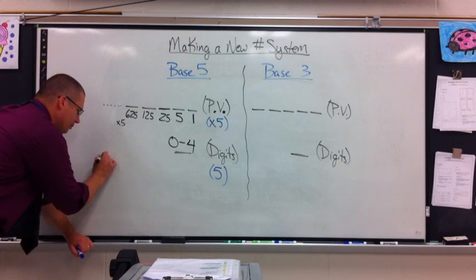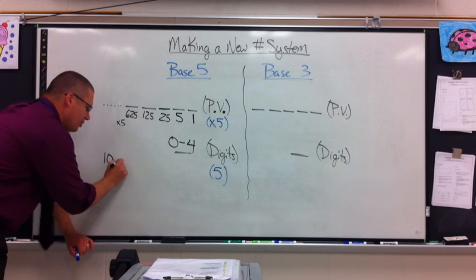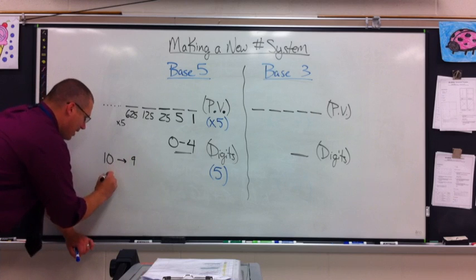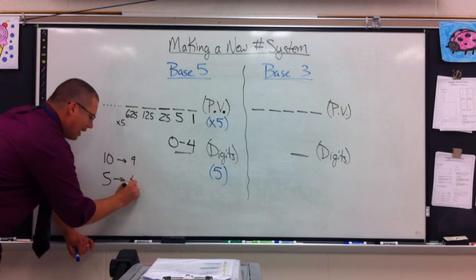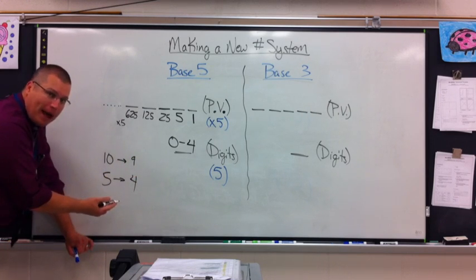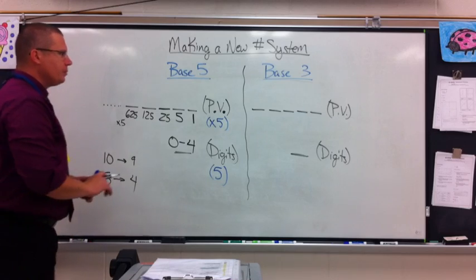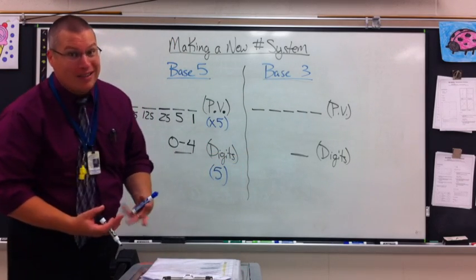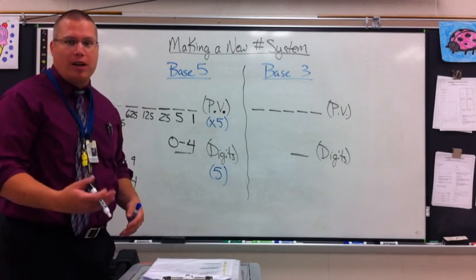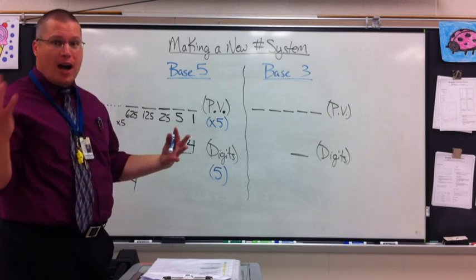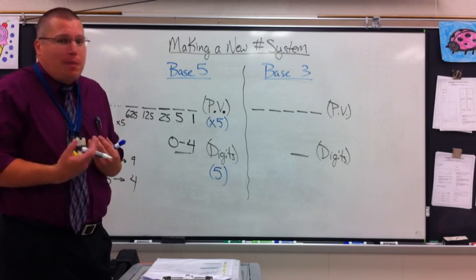Now, a quick pattern here. In base 10, the highest digit I was allowed is a 9. In base 5, the highest digit I'm allowed is a 4. Hopefully, you pick up on a pattern that's always 1 less. What about base 3? See, I can make bases in anything. Base 1, base 2, base 3, base 4, base 5. Any base. We just happen to use base 10.